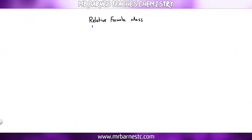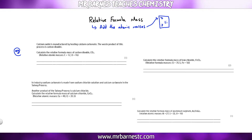We're going to start off with the easy one, which is relative formula mass. Nice and simply, all you have to do is add up the atomic masses — the big number on your periodic table. Now the best way to go through this is to have a look at some practice examples. The key trigger you're looking for is the phrase 'relative formula mass' — the second you see that, add the atomic masses together.